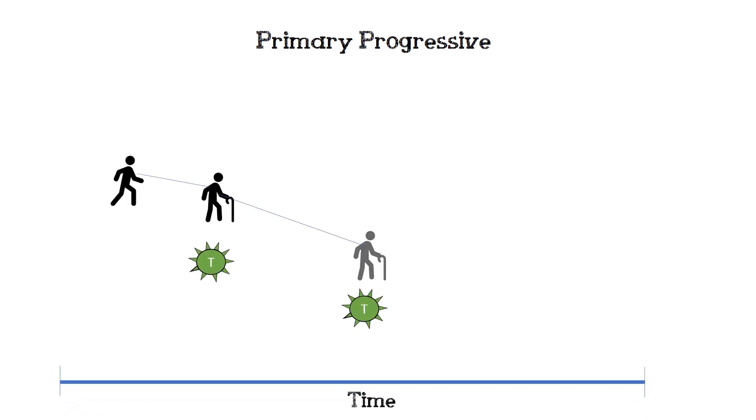Primary progressive is a situation where there isn't so much remyelination. Instead, the attack is constant, causing a less stepwise degeneration.